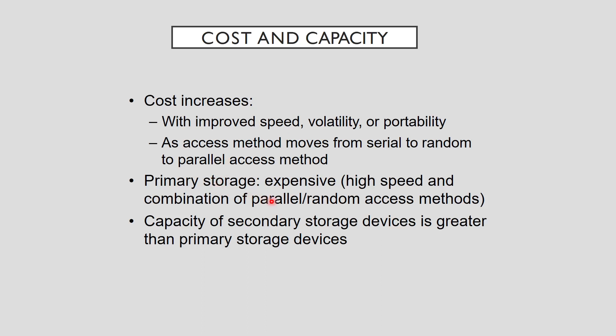Primary storage is generally expensive compared with secondary storage because of its high speed and combination of parallel and random access methods. Secondary storage is usually thought of as having much higher capacity than primary storage. Capacity differences between primary and secondary storage result from compromise between cost per unit and other device characteristics. For example, if cost were not a factor, most users would opt for solid-state drives rather than magnetic hard drives. However, most users need hundreds of gigabytes of secondary storage, and solid-state drives for this capacity cost more than most users can afford, so users sacrifice speed and parallel access to gain the capacity they need at an acceptable cost.